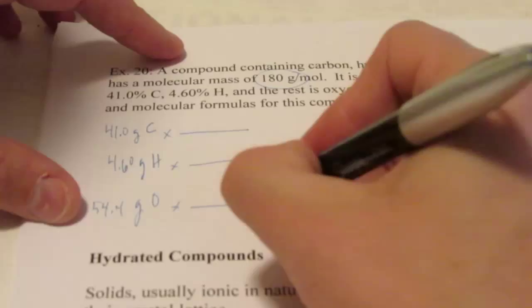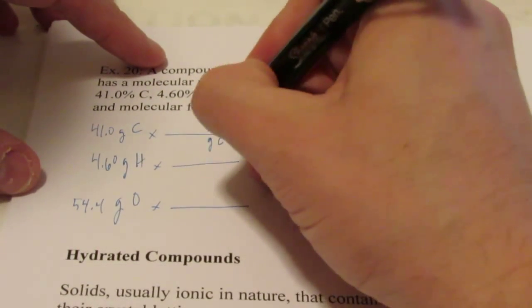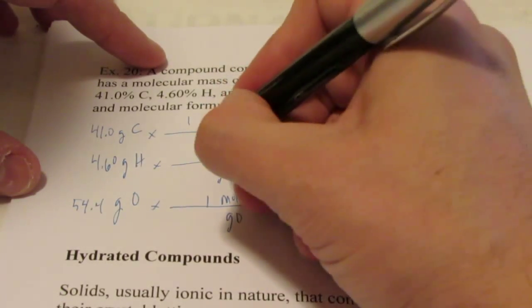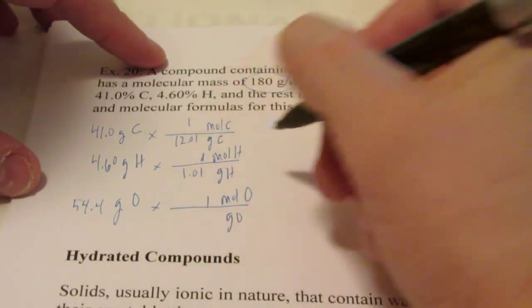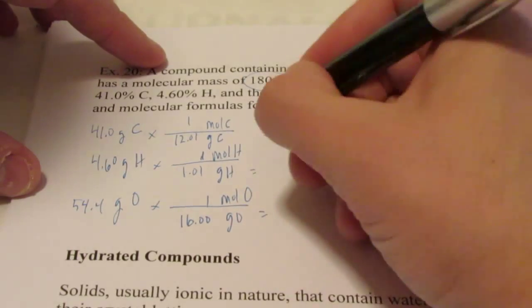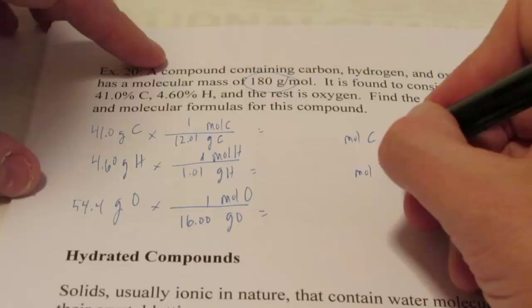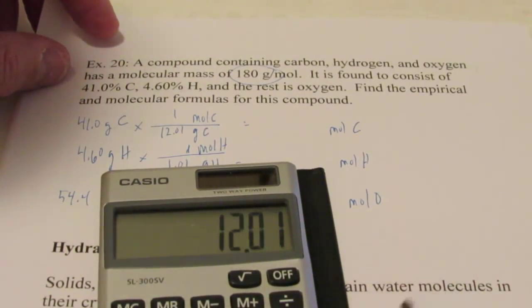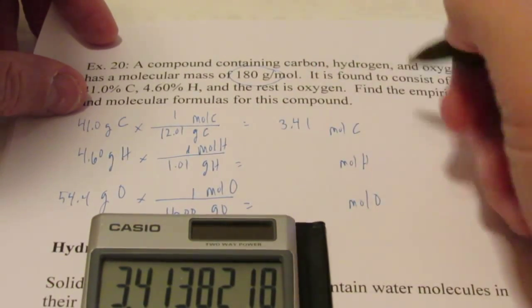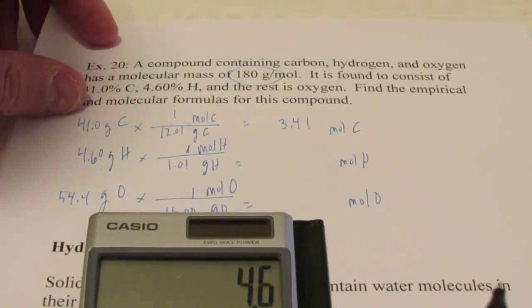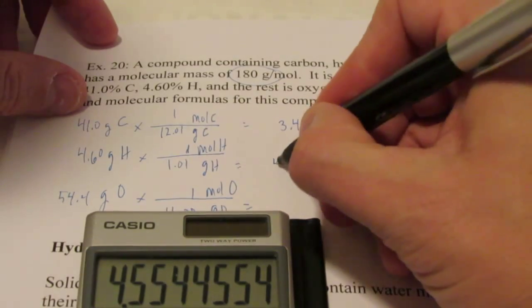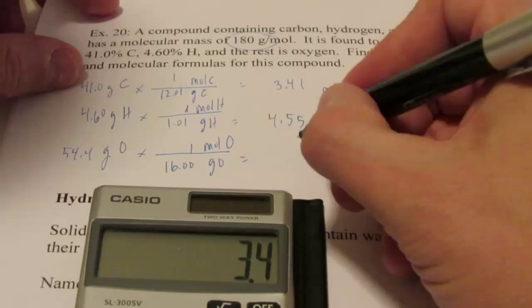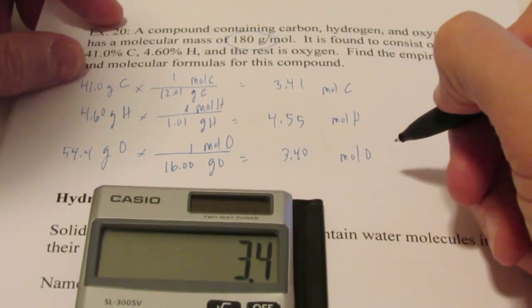And remember, step two, we have to find the number of moles of each. So grams of carbon to moles of carbon, grams of hydrogen to moles of hydrogen, grams of oxygen to moles of oxygen. Carbon is 12.01 grams per mole, hydrogen is 1.01, and oxygen is 16.00. So moles of C, moles of H, and moles of O. So here we go. 41 divided by 12.01 is 3.41 moles of C. 4.60 divided by 1.01 is 4.55 moles of H. And finally, 54.4 divided by 16.0 is 3.40 moles of O.